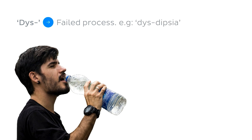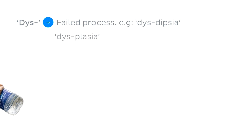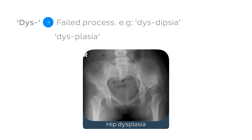Another common negative prefix is 'dys,' which generally implies a condition resulting from a failed process in the body. For example, 'dysdipsia' — dys as in failure, dipsia as in thirst — which describes a difficulty in drinking. Or 'dysplasia' — dys again as in failure, plasia as in development — which can be related to a host of developmental abnormalities.